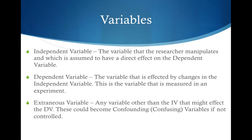Extraneous variable. This is any variable other than the independent variable that might affect the dependent variable. These could become confounding variables if not controlled — meaning you haven't controlled other variables besides the independent variable.